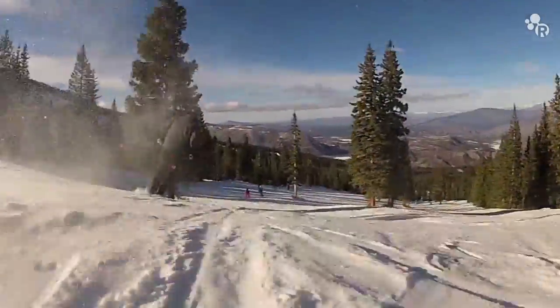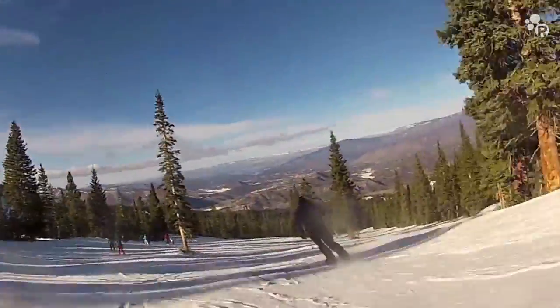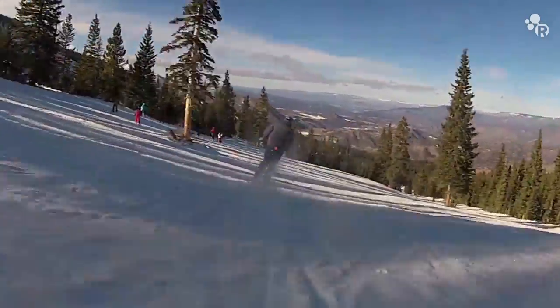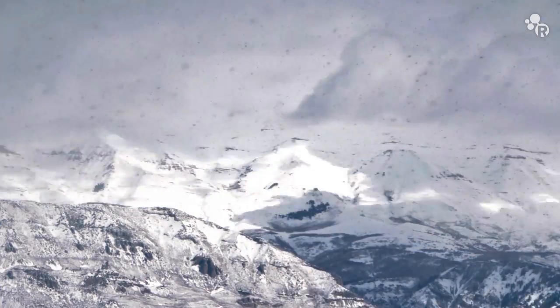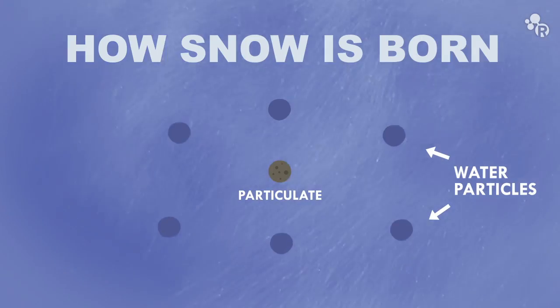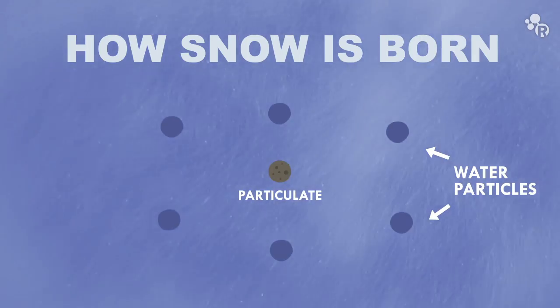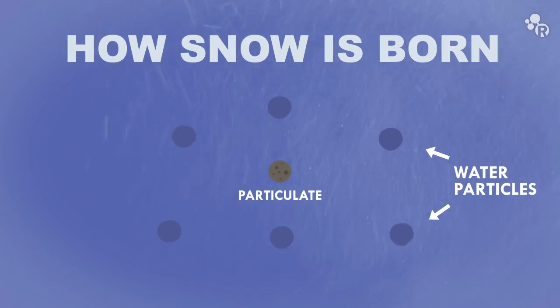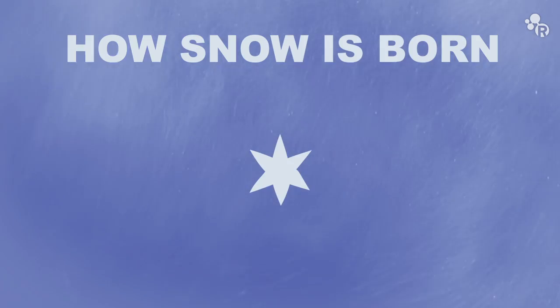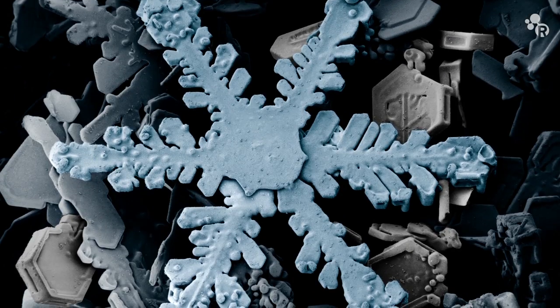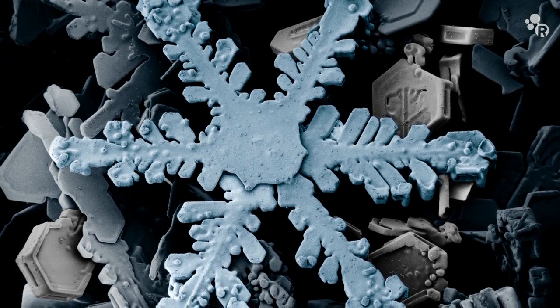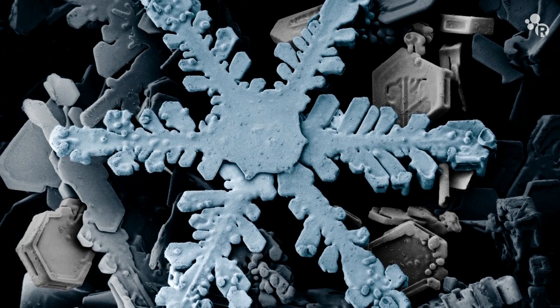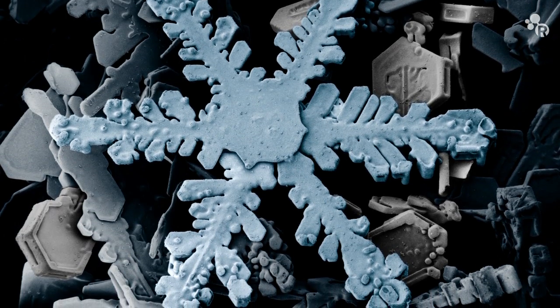Producing artificial snow is not as simple as grinding up big blocks of ice and spraying it around. Snow goes through quite a process in nature, and here on the ground we have to make sure we mimic certain conditions perfectly to make it happen. When snow forms naturally, tiny droplets of liquid water in a cloud freeze and form a crystal around particulate matter like a speck of dust. That piece of particulate is the so-called nucleating agent, which acts as a seed for all the ice crystal growth action.